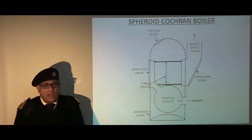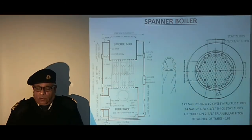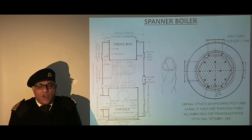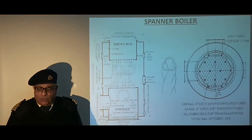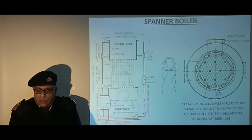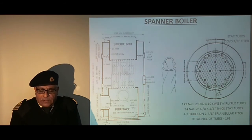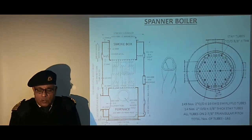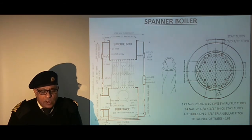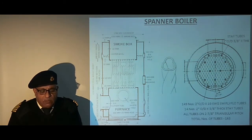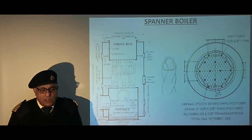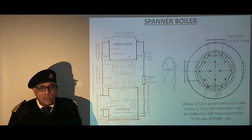In the following slide we will study the Spanner boiler. This sketch shows a Spanner oil-fired boiler which has vertical smoke tubes. It consists of an outer shell which encloses a cylindrical furnace connected by vertical smoke tubes to the cylindrical smoke box at the top of the boiler. At the bottom we have the furnace which is surrounded by water on all sides except the bottom, and the tube plates are connected by the vertical smoke tubes.